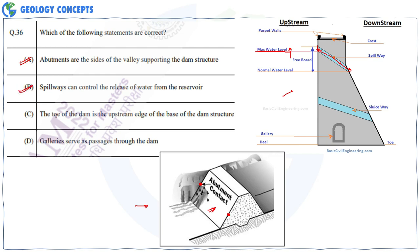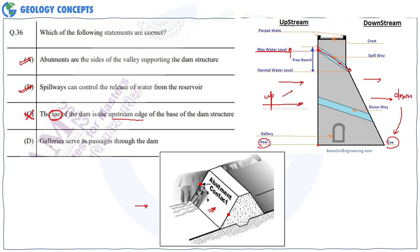So spillways controlling the release of water is a correct option. The third option says the toe of the dam is the upstream edge of the base — but the toe is on the downstream side, while the upstream base is called the heel. So this is the wrong option. The last option says galleries serve as passages through the dam — this is correct. So A, B, and D are correct for this one.